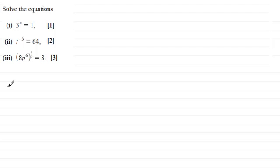Well for the first one we should be fairly familiar with this one. We've got to solve 3 to the power n equals 1, and anything to the power 0 is going to be 1. So for something like this we've got therefore n equals 0.